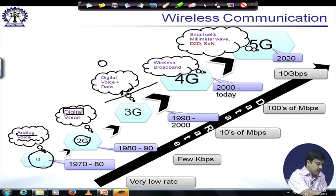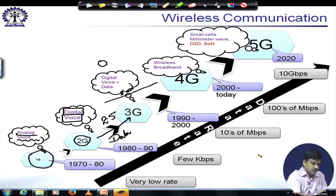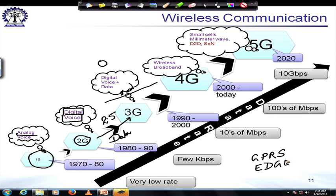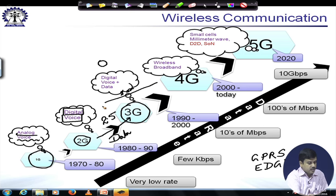However, voice still remained as the most important traffic to be carried. While things were going from 2G to 3G, there was a period sometimes referred to as 2.5G where data was introduced to be carried over mobile networks. Systems such as GPRS and EDGE were introduced to carry data within the same channel as voice signals. Around 1990 to 2000, 3G was developed, with deployment happening from 2001 onwards.